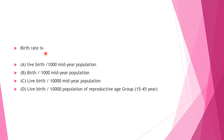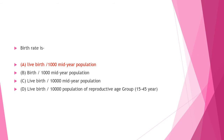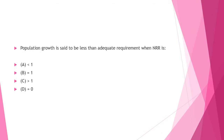Next question: Birth rate is — Option A: live births per 1,000 mid-year population, Option B: births per 1,000 mid-year population, Option C: live births per 10,000 mid-year population, Option D: live births per 10,000 population of reproductive age group (15 to 45 years). Answer is Option A: live births per 1,000 mid-year population.